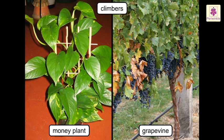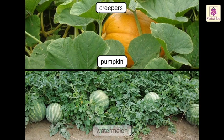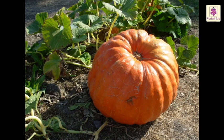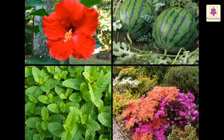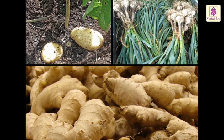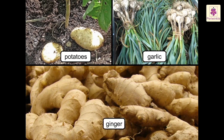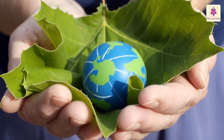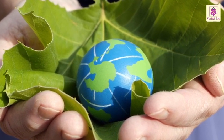Some climbers like the money plant and grapevine have narrow and weak stems — they need the support of trees or poles to climb. Creepers like pumpkin and watermelon plants also have narrow and weak stems; these creep on the ground and bear big, heavy fruits so they cannot climb on a support. Typical stems are located above the ground, but there are modified stems that grow below the ground — such as potatoes, garlic, and ginger.